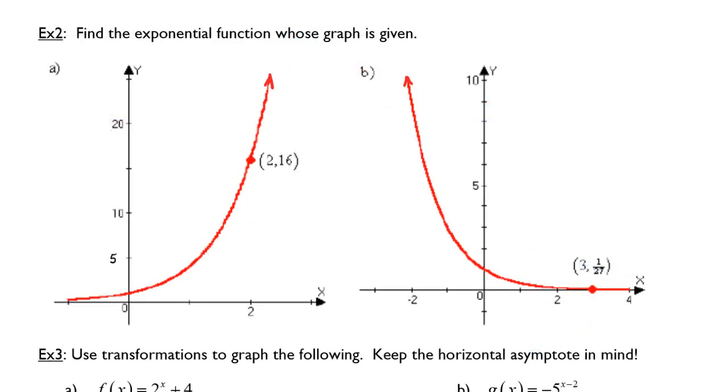In example 2, we need to find the exponential function whose graph is given. We are given a point along the curve at 2, 16. And we're also given an intersection point that's assumed to be at 0, 1.